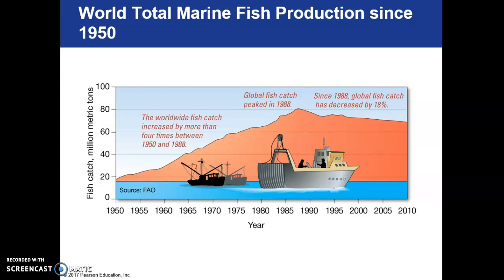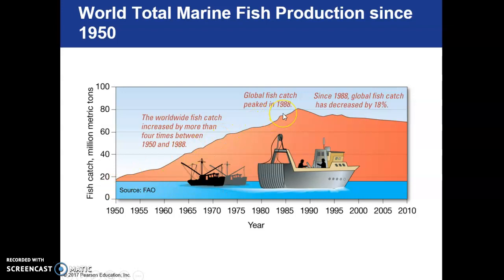Looking at total production since 1950, it peaked around 1988 and fish production is still very high. Part of this steep increase had to do with technology availability. Fishing became a well-known and promoted job, and there was significant government support between 1950 and 1980 that incentivized people to enter the fishing industry, causing a huge increase in the worldwide fishing fleet. By 1988 we hit our peak, and that's also when we started understanding some of the effects of what we were doing.